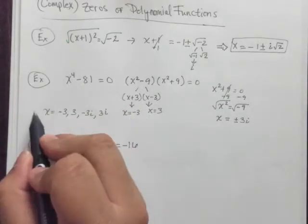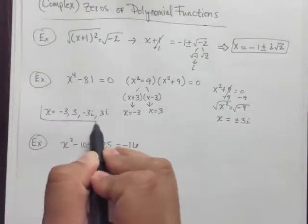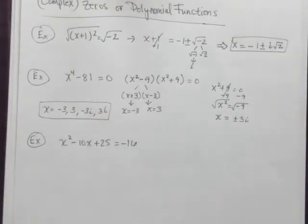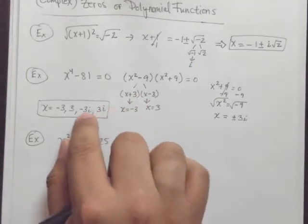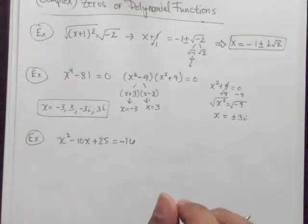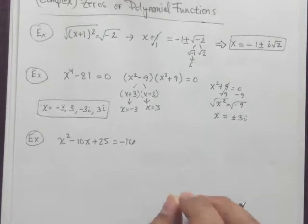and it equals positive 3i. So those are the four zeros. We have two real zeros and two imaginary or two complex, well, let's just call them imaginary for now, two imaginary solutions for this function, okay?